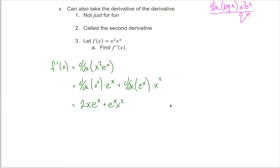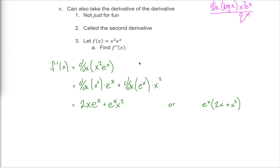You could leave your answer just like this, or you might recognize that both of these terms have an e to the x in them, so you could factor out that e to the x, and if you pulled it out you'd be left with 2x plus x squared. Either way is totally fine — f prime of x equals either of these two expressions. But that's not where the story stops. We weren't trying to figure out f prime of x, the derivative. We're trying to figure out f double prime of x, the second derivative.